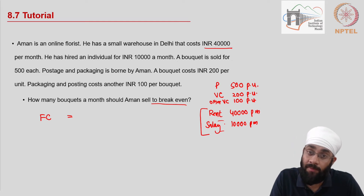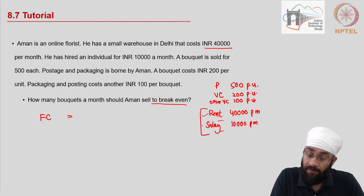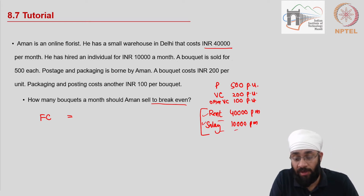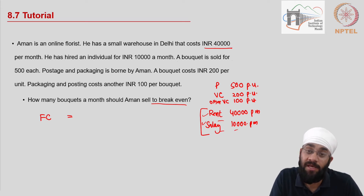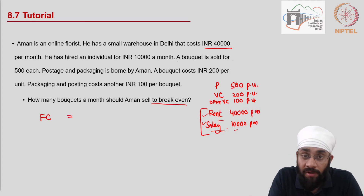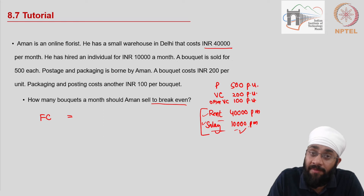If you want to sell more bouquets, will you have to pay more rent? No. If you sell fewer bouquets, will you pay less to the person you've hired? No — you'll still pay him 10,000. It's a salary, a fixed incentive. If the salary were per delivery or per bouquet sold, then you would count it as a variable cost.